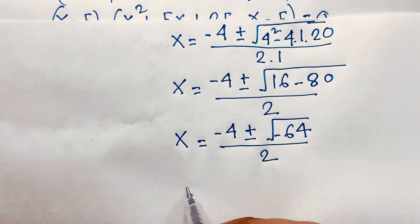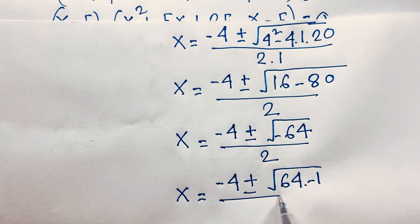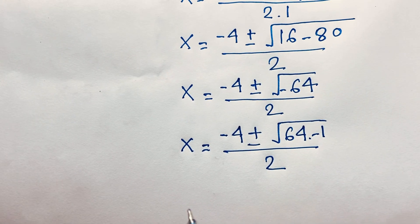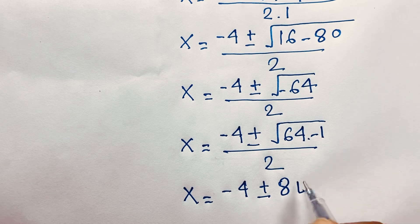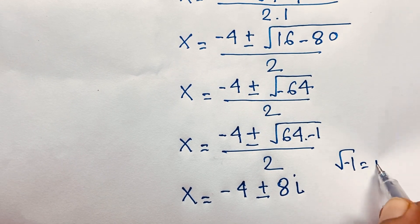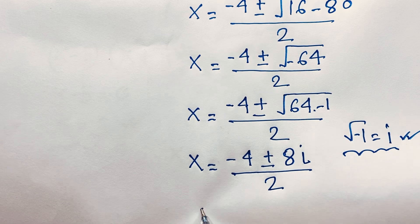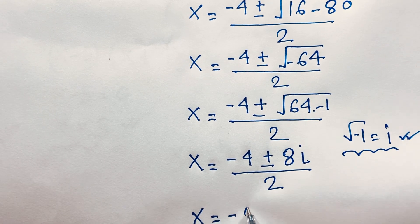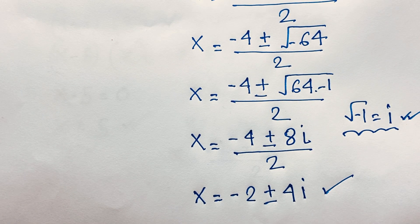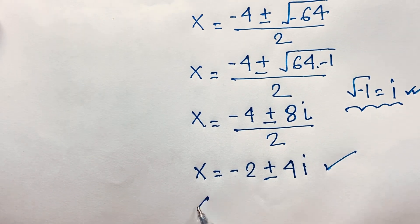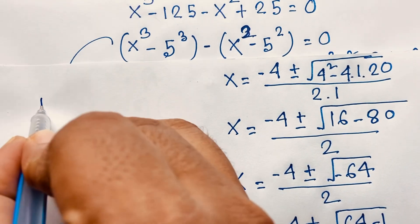Now √(-64) = √(64 × -1) = 8i, since √(-1) = i, a complex number. So x = (-4 ± 8i) / 2 = -2 ± 4i. These are our two complex solutions. In summary, x = 5 and x = -2 ± 4i.